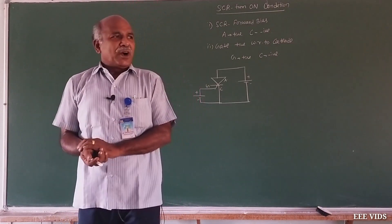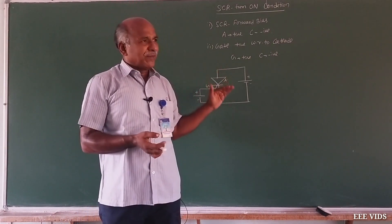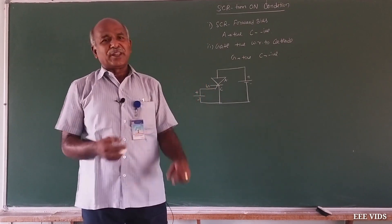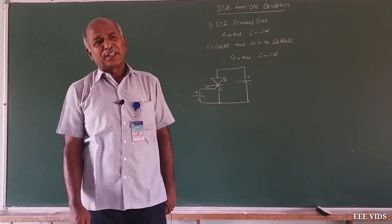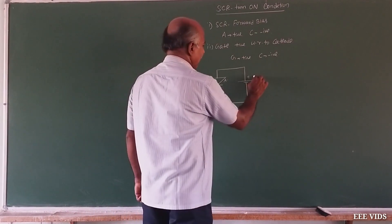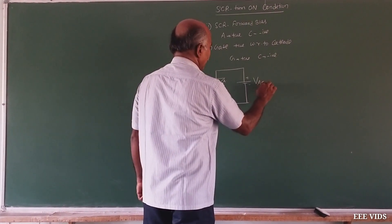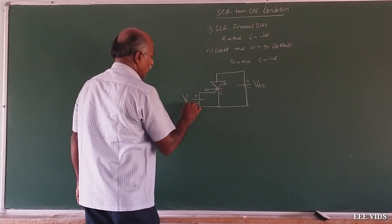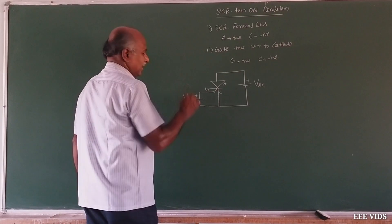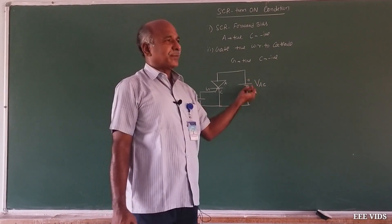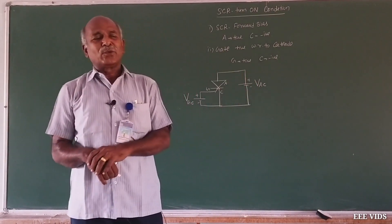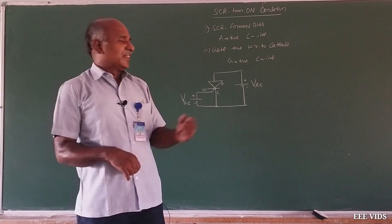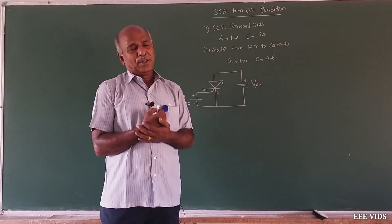Now in the circuit, we need two supplies: one supply is the anode-to-cathode voltage, and another one is the gate-to-cathode voltage. The cathode terminal is sometimes denoted as C or K into the cathode.